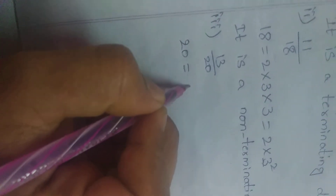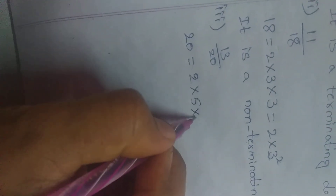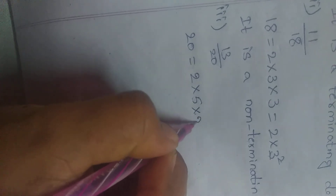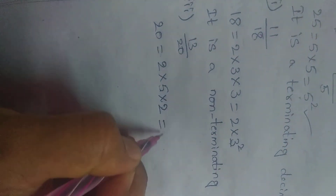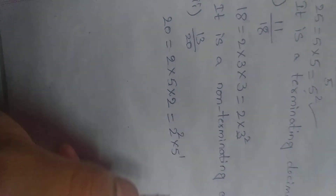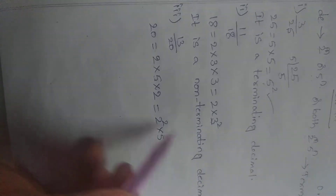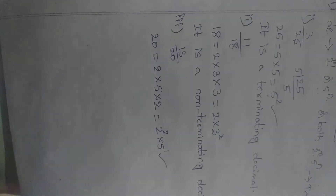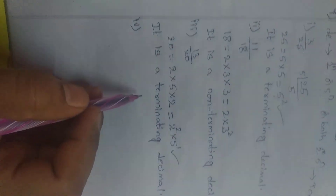Now the third problem: 13 by 20. Checking the denominator, 20 can be expressed in the form of 2 power n and 5 power n, so it is a terminating decimal.